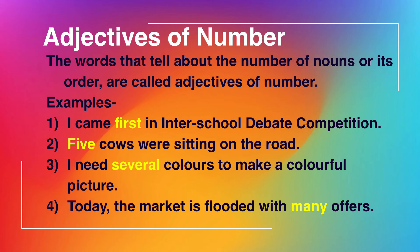Now, adjectives of number. The words that tell about the number of nouns or their order are called adjectives of number. For example: 'I came first in the inter-school debate competition.' Here 'first' tells us the position or order, so 'first' is an adjective of number.